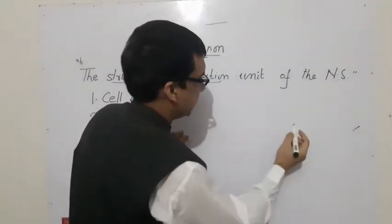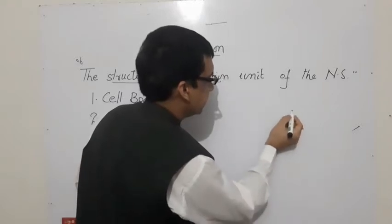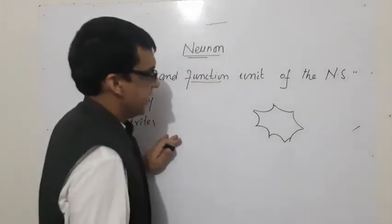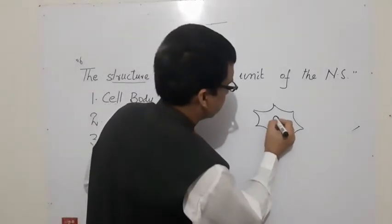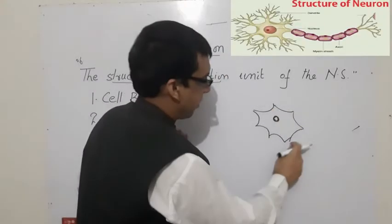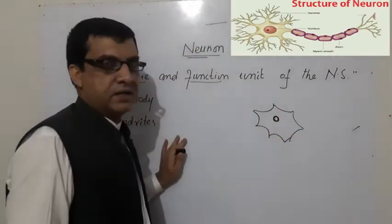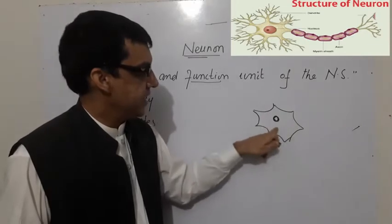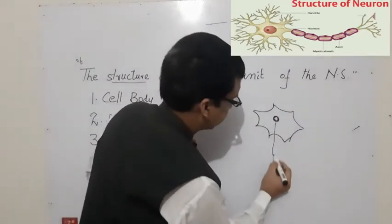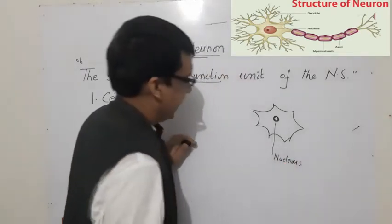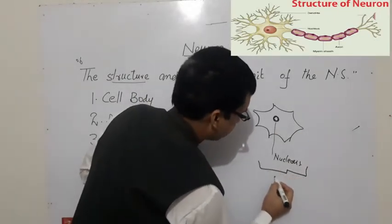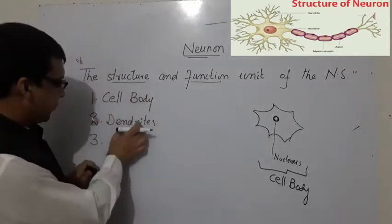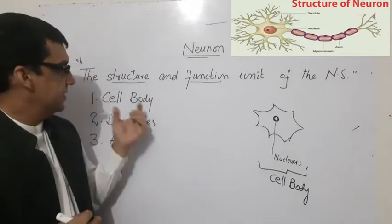Let's draw the diagram of this typical neuron. This is the cell body — the central part of the neuron. It consists of a nucleus, and in the cytoplasm other cell organelles are also present, like mitochondria, Golgi complex, etc. This central part is called the cell body.